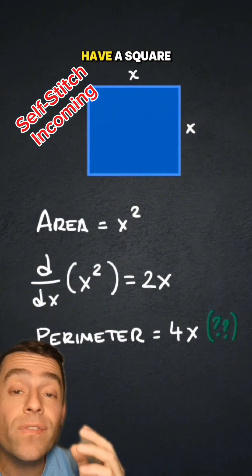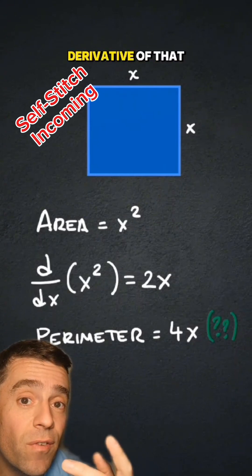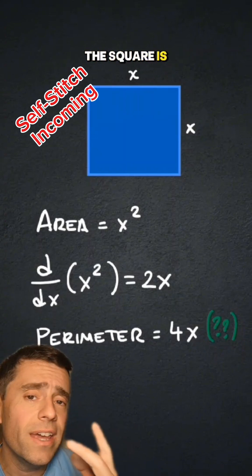Question for you. If I have a square of side length x, the area is x squared. And if I take the derivative of that, I get 2x. However, the perimeter of the square is 4x.